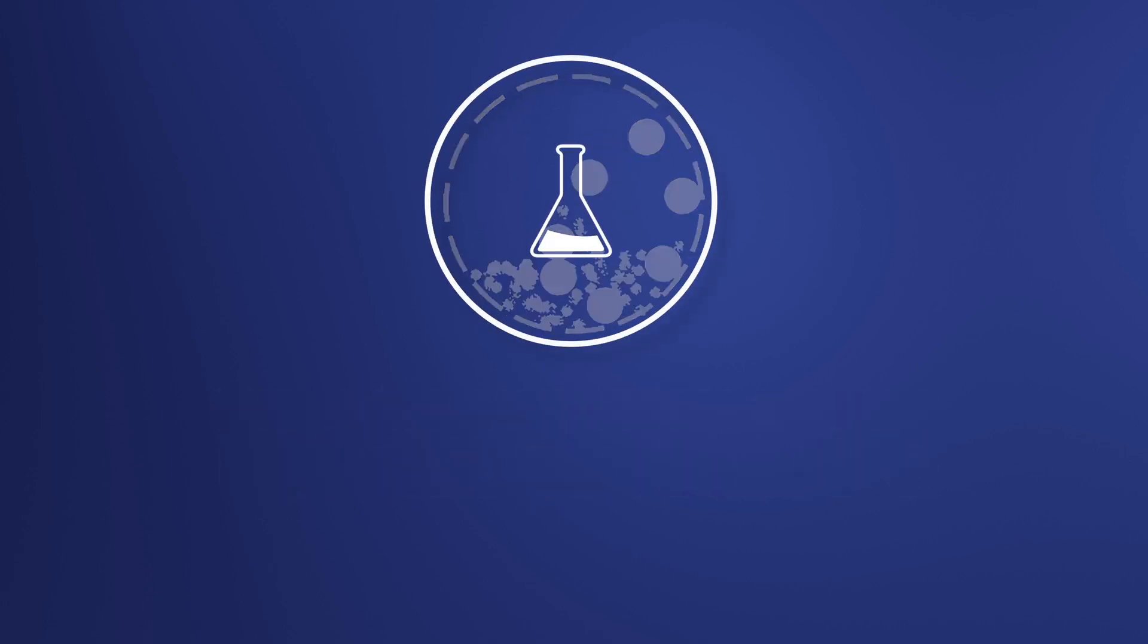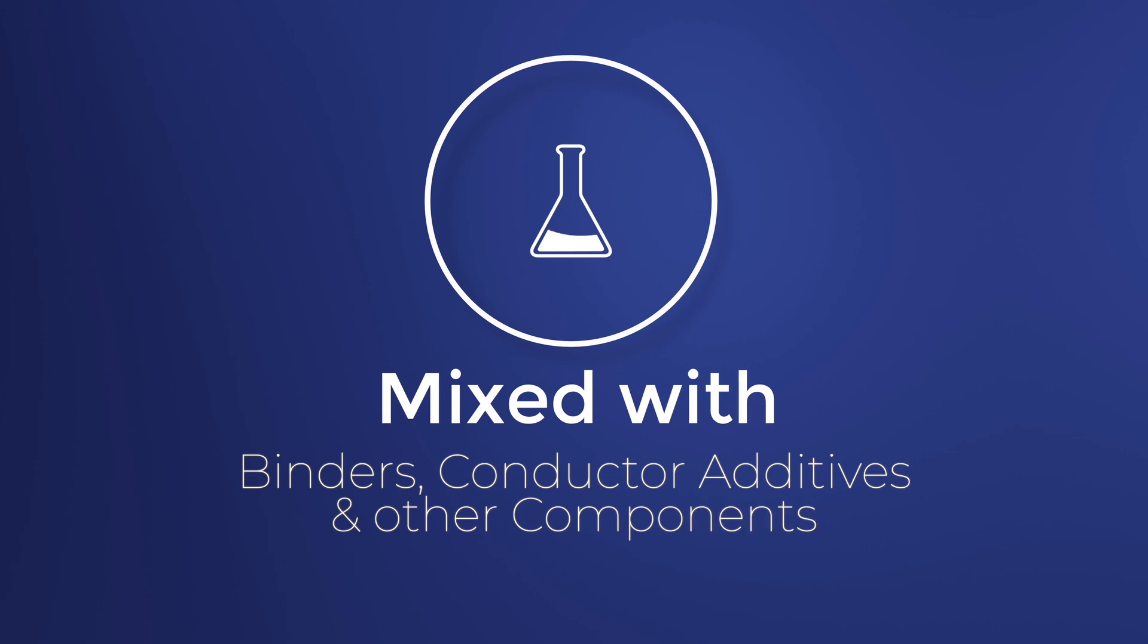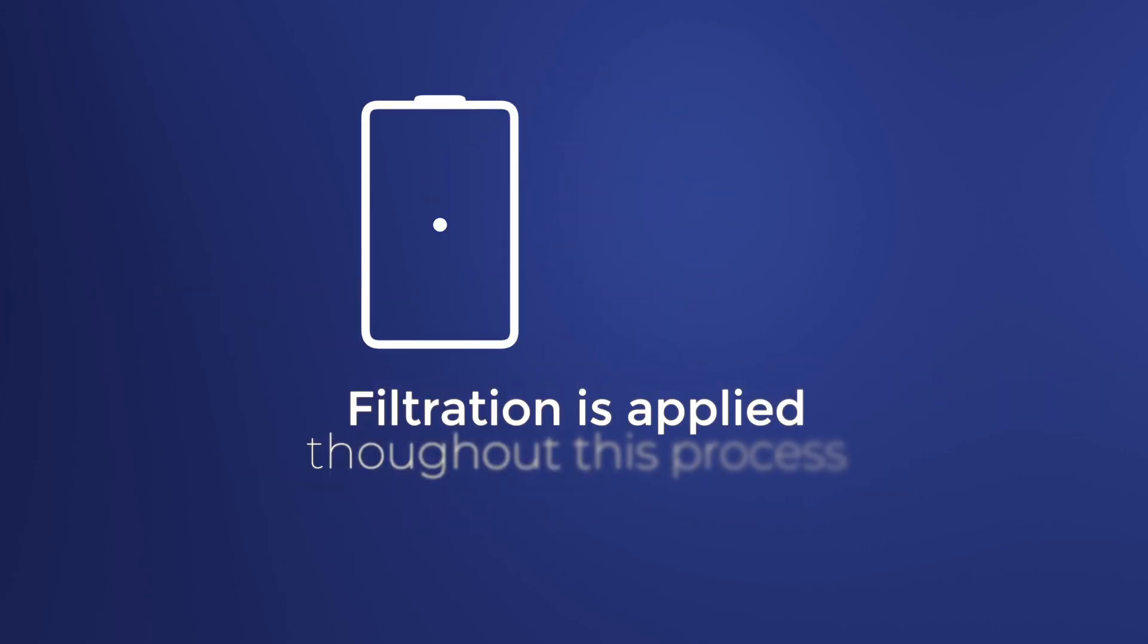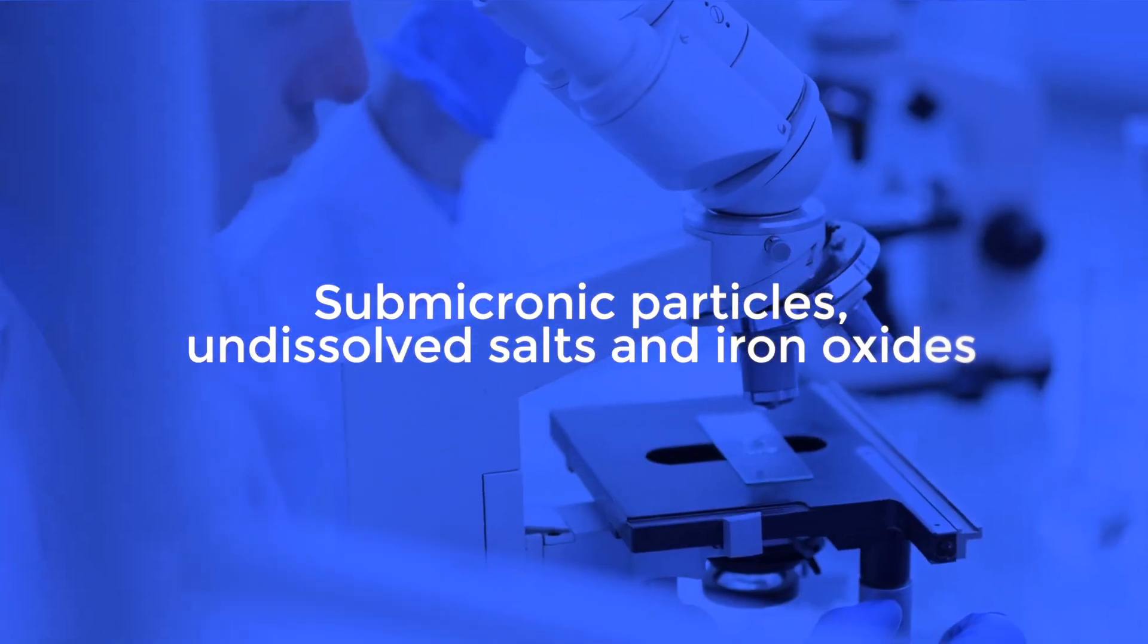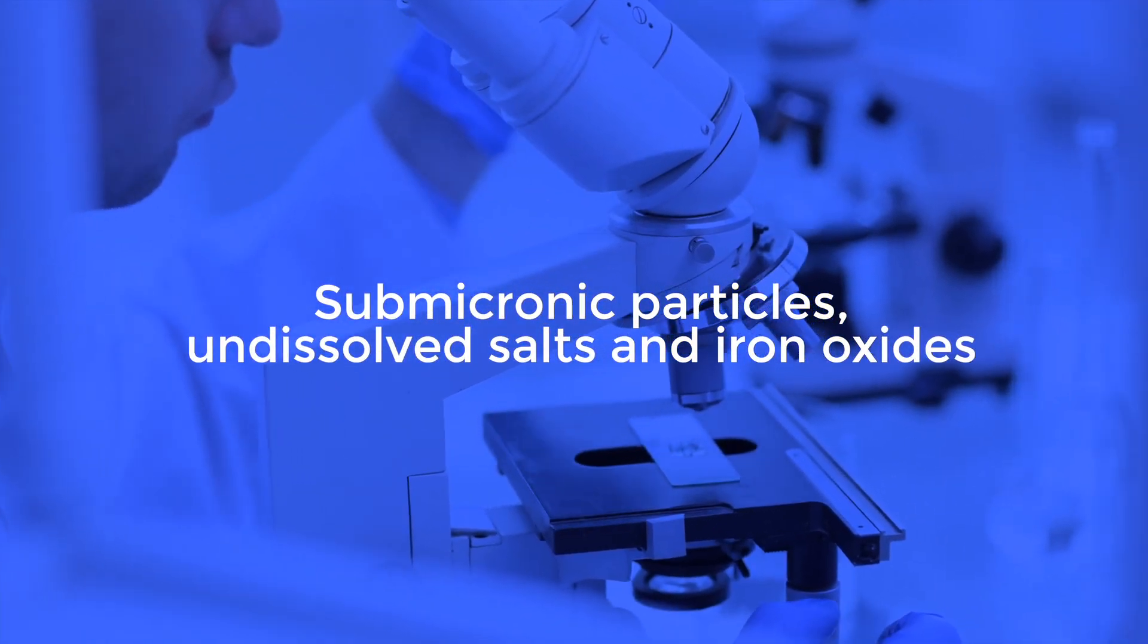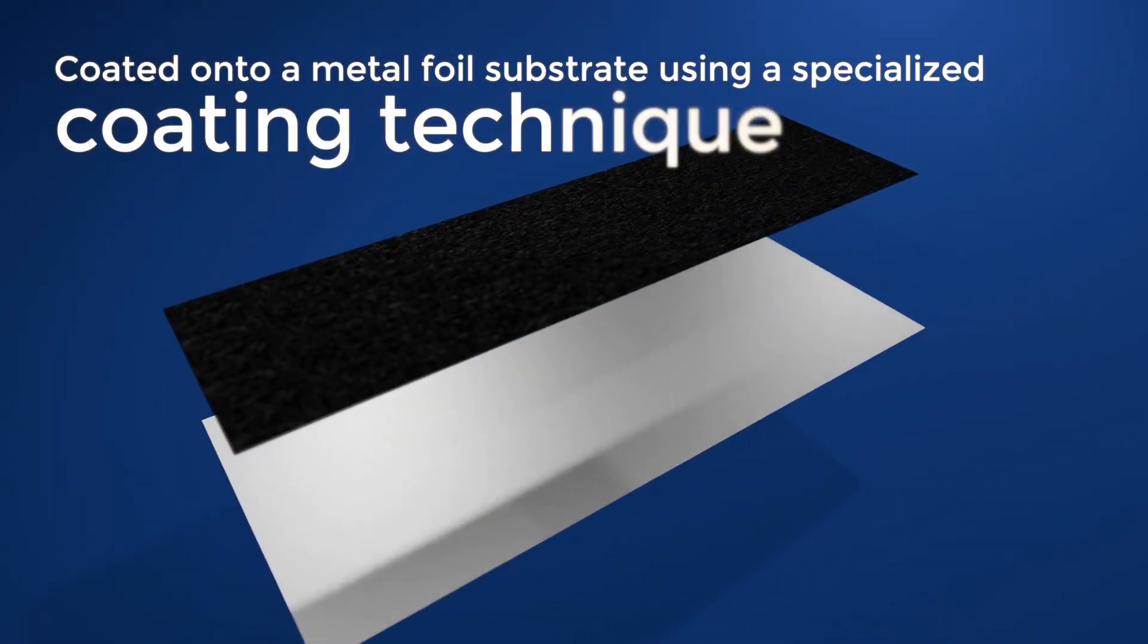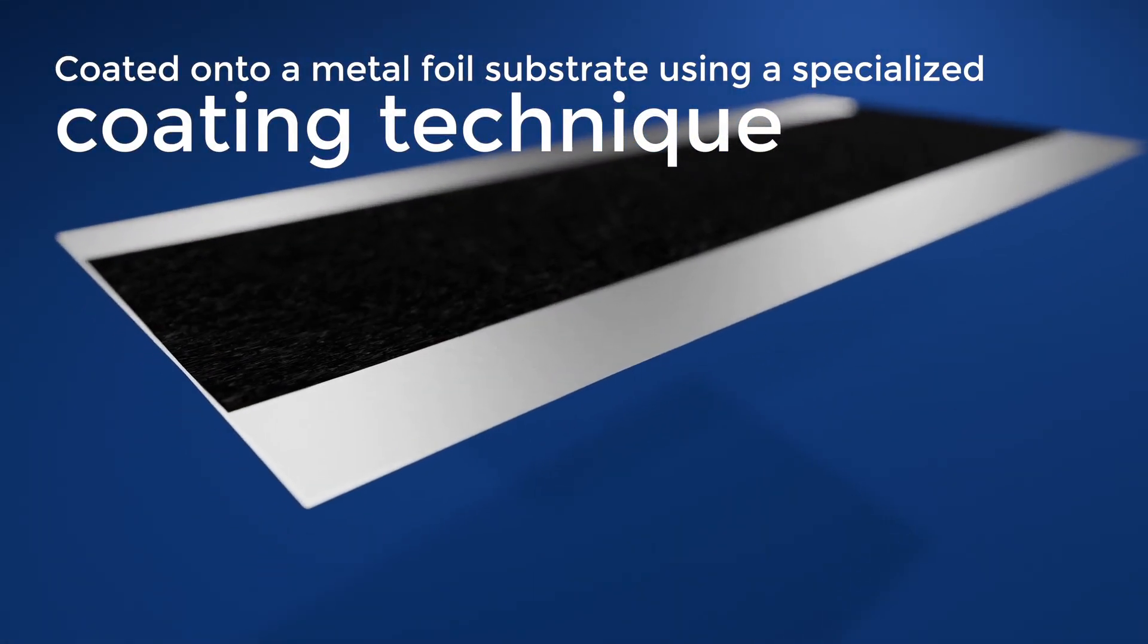Now these active materials are mixed with binders, conductive additives, and other components to form a slurry or paste. Filtration is applied throughout this process to ensure submicronic particles, undissolved salts, and iron oxides are removed from the slurry before it's coated onto a metal foil substrate using a specialized coating technique.